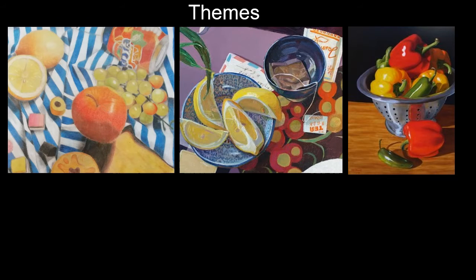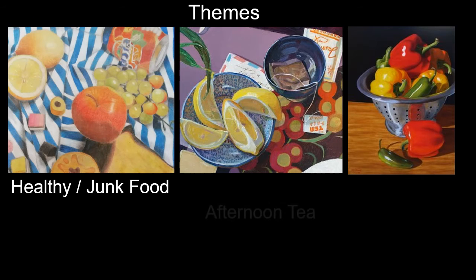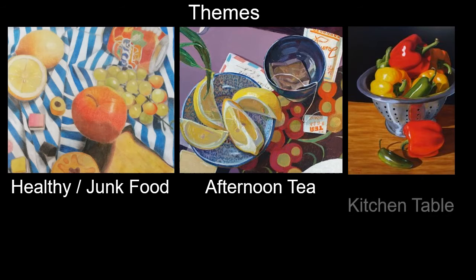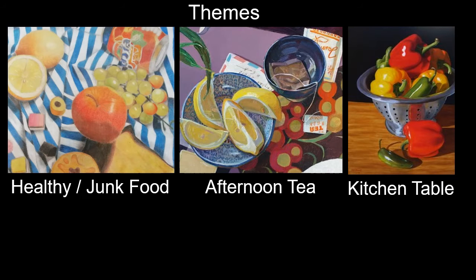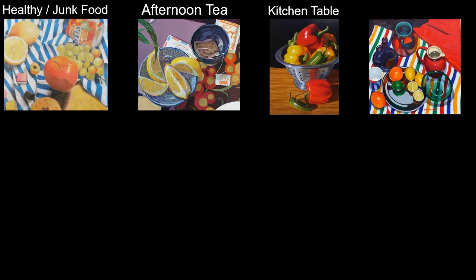Here are the themes you can choose from, and they're pretty open to help you personalize your project: healthy versus junk food, afternoon tea, and kitchen table. For each theme, this would include drawing four or five of the objects separately, and then you would group them together at a later development stage.